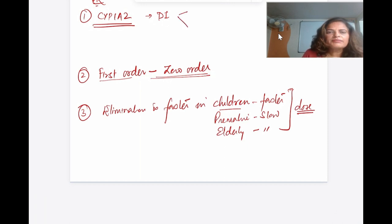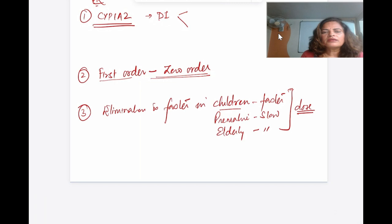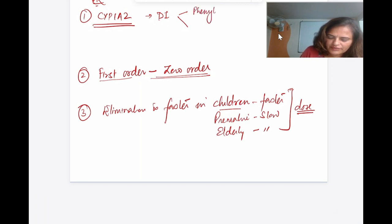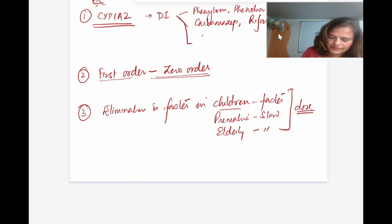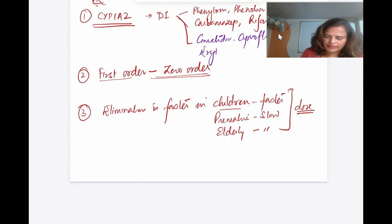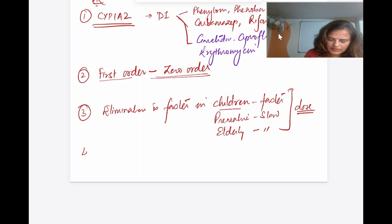Important drug interactions with theophylline: with enzyme inducers (phenytoin, phenobarbitone, carbamazepine, rifampicin) you must increase the dose. With enzyme inhibitors (ciprofloxacin, erythromycin, cimetidine), you must decrease the dose to avoid toxicity. The therapeutic plasma concentration (safety margin) is narrow: 5 to 20 micrograms per mL.